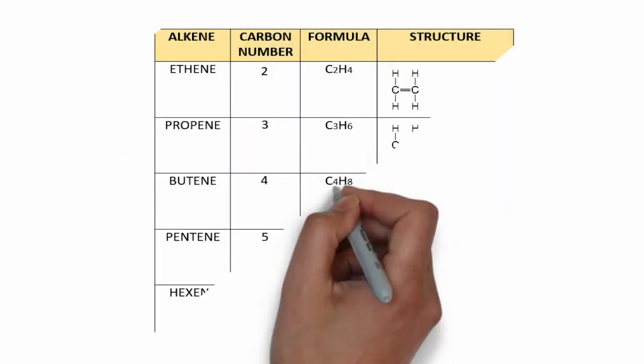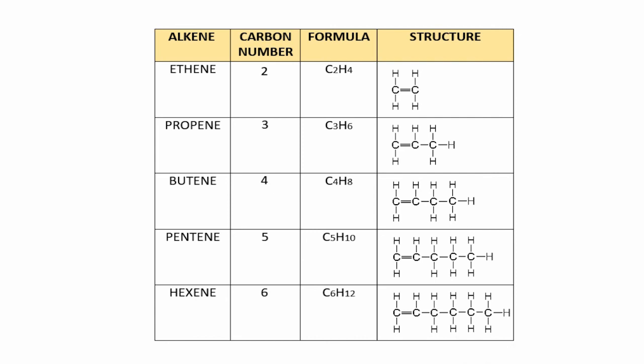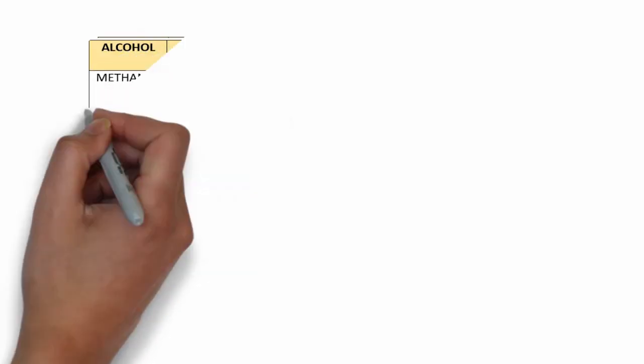Alkenes are another homologous series with the ending '-ene.' Their functional group is the carbon-carbon double bond. The series starts from ethene (two carbon atoms), because with only one carbon atom a double bond is not possible. The series goes: ethene, propene, butene (four carbons), pentene (five), and hexene (six carbon atoms). In all these structures, a carbon-carbon double bond is present, which you can observe and pause the video to memorize.